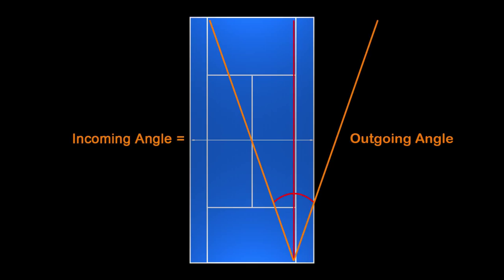The fourth reason why hitting down the line is often problematic is the natural tendency to miss shots wide when you go down the line, due to a simple physics concept. If the ball is coming in at an angle into your racket, it will naturally tend to come out at an angle — the incoming angle equals the outgoing angle. You have to compensate for this tendency with your racket, which is very difficult to time. That's why players so often miss wide in the doubles alley. When you hit cross court that's not the case, so it's much safer.